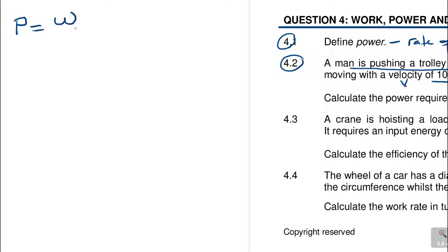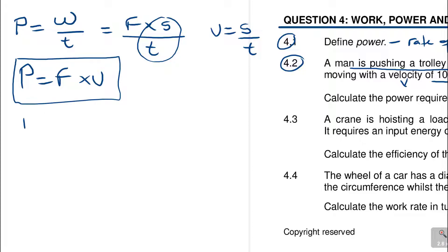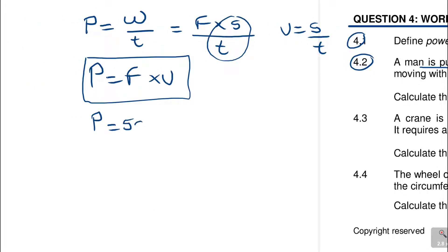Remember, power is work done over time taken, which equals force times distance over time. Distance over time is velocity V. The formula power equals force times V is given in the formula sheet. So power equals force times velocity: 500 Newtons times 10, which is 5000 Watts, or divided by 1000, that's 5 kilowatts.